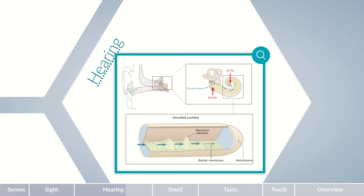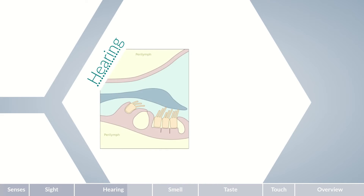Detection through secondary sensory cells in the organ of Corti occurs at the site of maximum basilar membrane motion. Because of their appearance, auditory sensory cells are called hair cells. There are two distinct types: inner hair cells and outer hair cells. The main task of outer hair cells is to enhance mechanical stimulation to decrease the threshold of hearing. Their stereocilia are in contact with the tectorial membrane and transfer basilar membrane motion to it.